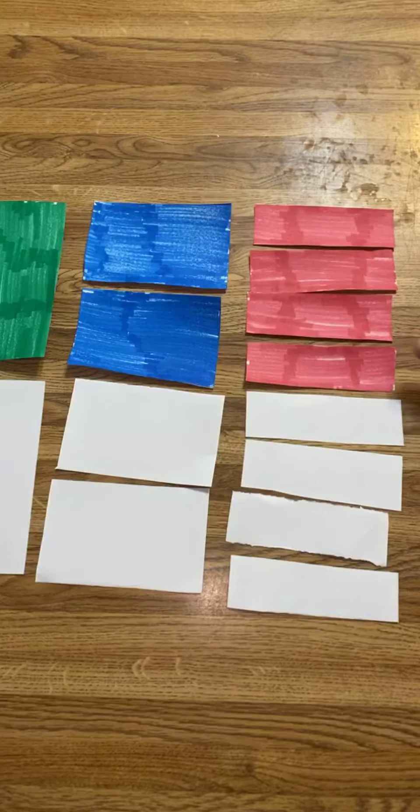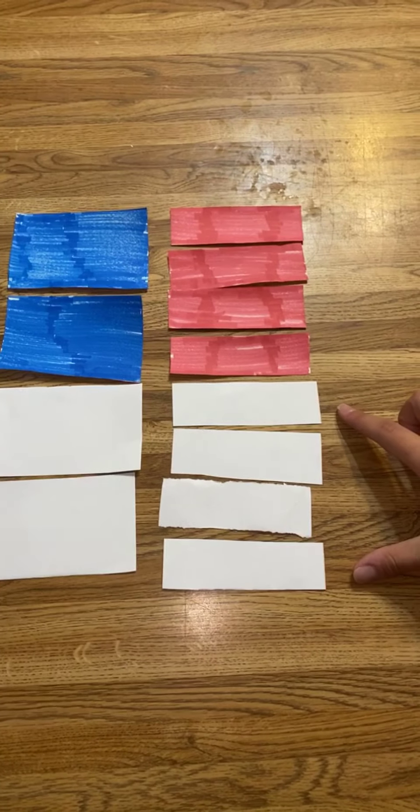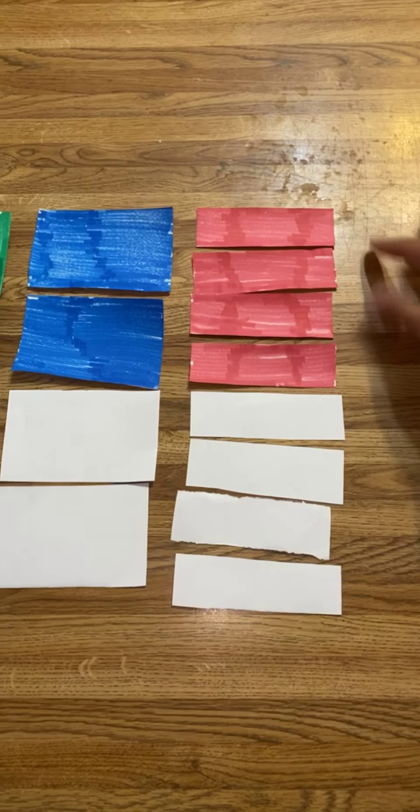The same thing from going from 2/4 to 4/8: our numerator was multiplied by 2, and our denominator was multiplied by 2, to give us the fraction 4/8.